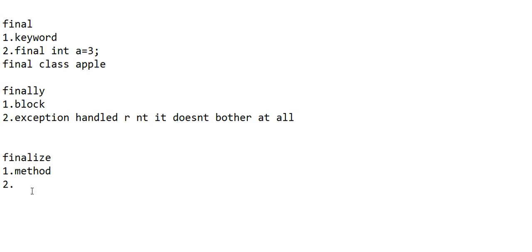So to summarize: final is a keyword used to create constants or prevent class inheritance. Finally is a block that will be executed whether the exception is handled or not — it does not bother at all. Finalize is a method which executes before the garbage collector runs, to remove all the resources of an object. Thanks for watching.